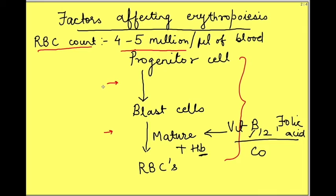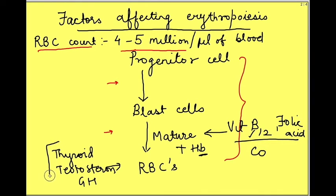There are certain other hormones which indirectly affect the production of RBCs. These are thyroid hormones, testosterone, growth hormone. Basically all these hormones increase the metabolic activity in body.